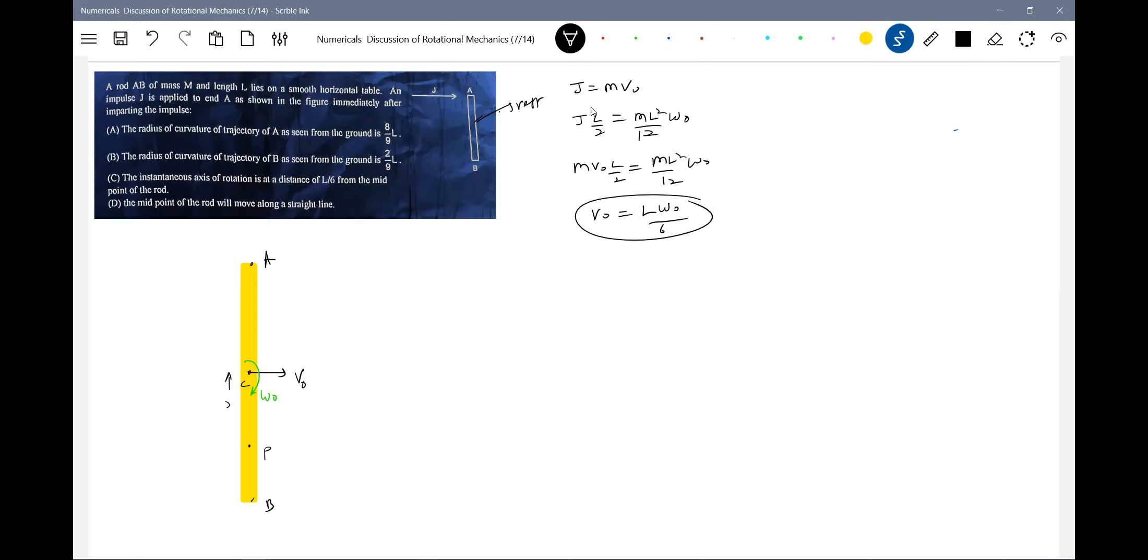Which is at position say x. What is the velocity of that point? The velocity of that point should be zero. So how velocity of that point will be zero? v_p should be equal to v_naught minus x omega naught.